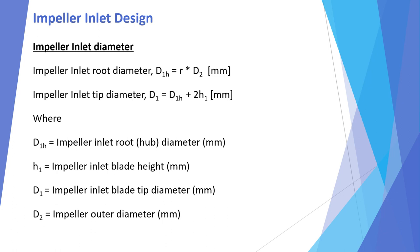For the impeller inlet diameters: the impeller inlet root or hub diameter D1h = r × D2. Since D2 and r are both known, D1h can be calculated. The impeller inlet tip diameter D1 = D1h + 2 × H1, so the inlet tip diameter is also known. Here, D1h is the root or hub diameter, H1 is the impeller inlet blade height in mm, D1 is the impeller inlet blade tip diameter, and D2 is the impeller outlet outer diameter in mm.